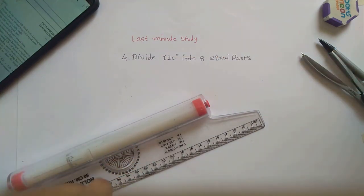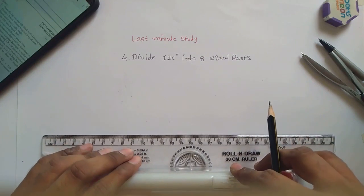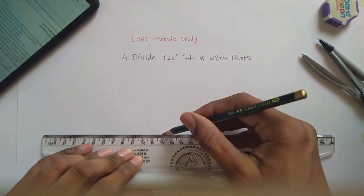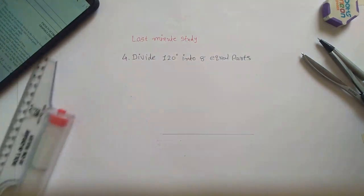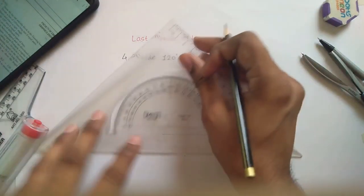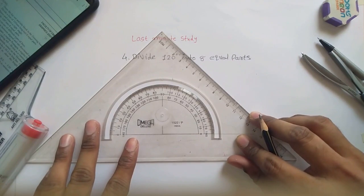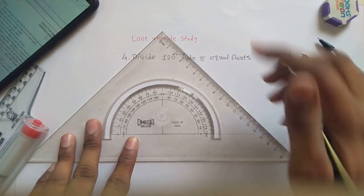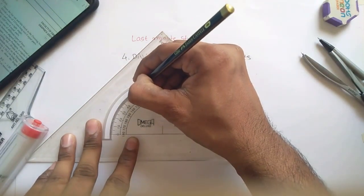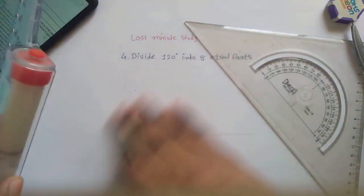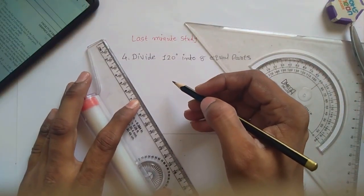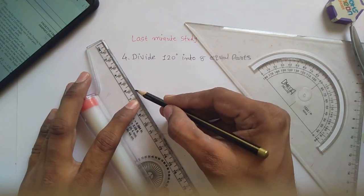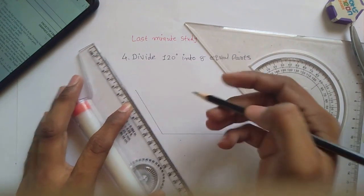First of all, draw a random line to construct a 120 degree angle like this, and measure a distance of 120 degrees by using a protractor, 120 degrees like this.